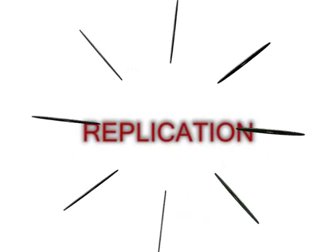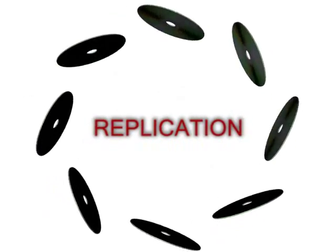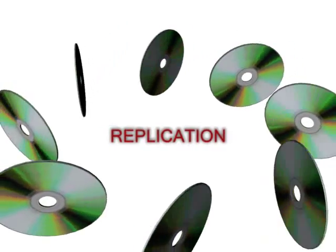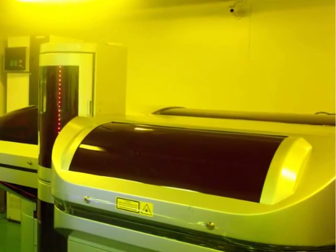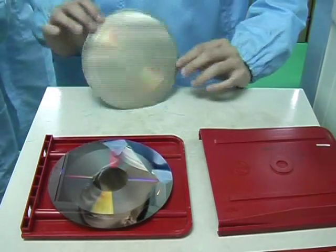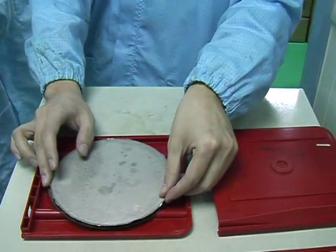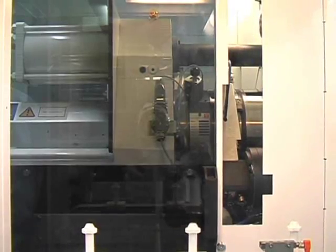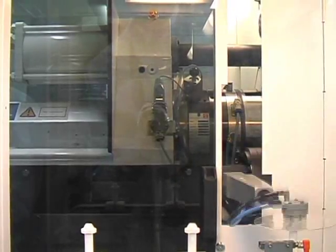Replication is the factory process where your original is read by a complex laser IDR reader, then embedded on a glass master plate that is used to create the copies of your content. The glass master is then used to literally stamp physical clones of your content onto high-quality blank material. The discs are then printed and packaged.